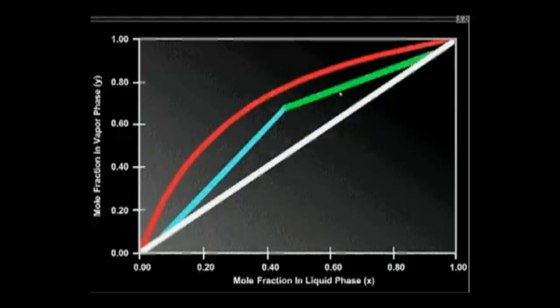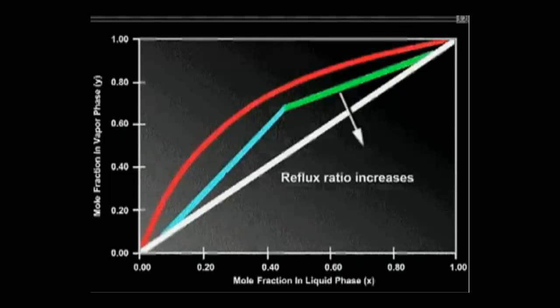As the reflux ratio increases, the rectifying internal reflux ratio increases and numerically approaches unity. Similarly, the stripping internal reflux ratio decreases and numerically approaches unity.